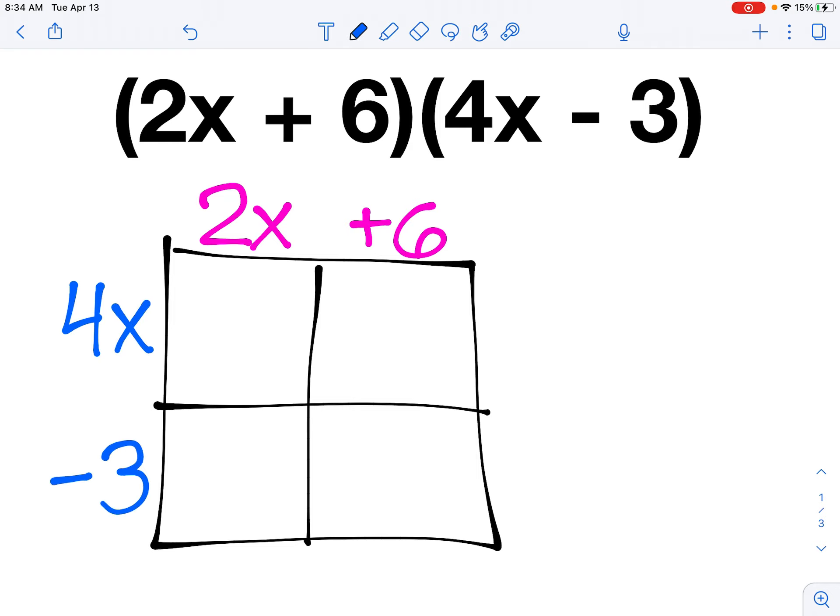This window makes sure that I multiply every piece of my first binomial by every piece of my second binomial. So the first thing I'm going to do is multiply 4x by 2x. Just like I did in the last station, I'm going to multiply my coefficients first. 4 times 2 would give me 8. And x times x can be simplified to x squared.